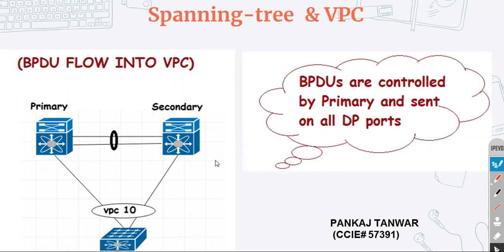If your root bridge goes down, the secondary device will become the root bridge and it will send BPDUs with the same MAC address. In this scenario, the main thing we need to keep in mind is that we need to have the same priority on both sides. The BPDU is a combination of priority plus MAC address.